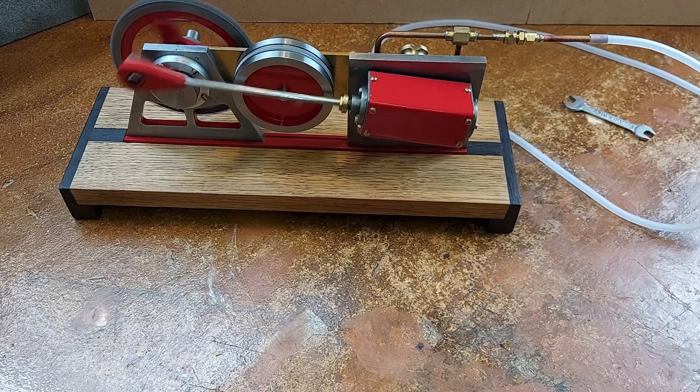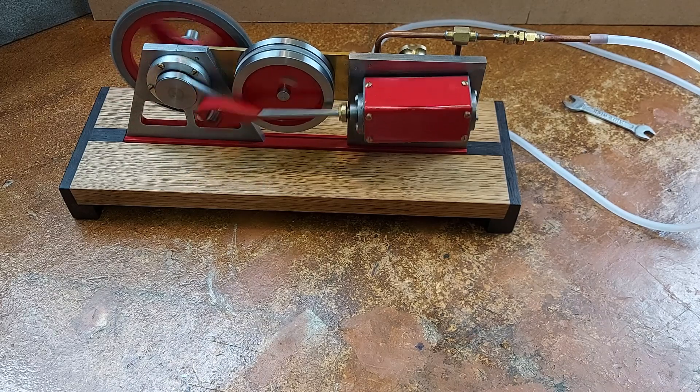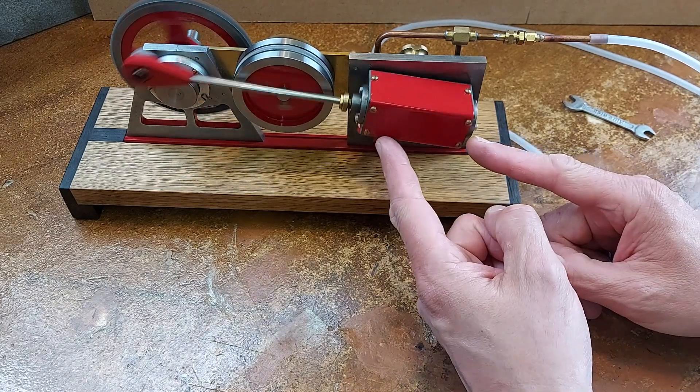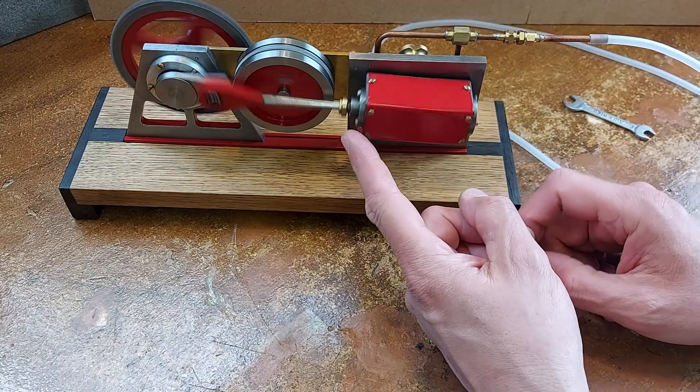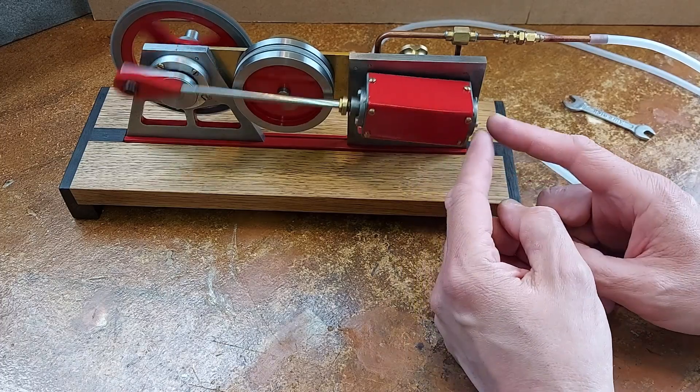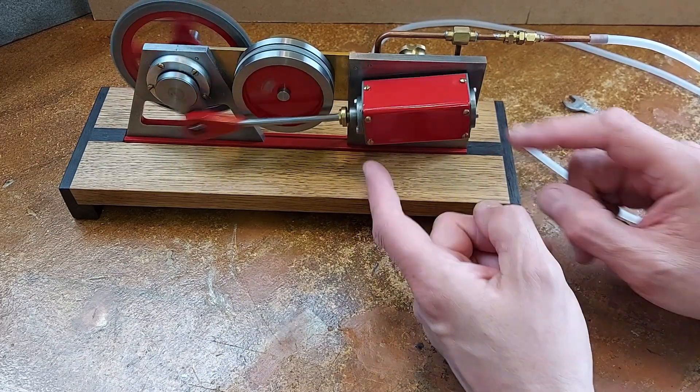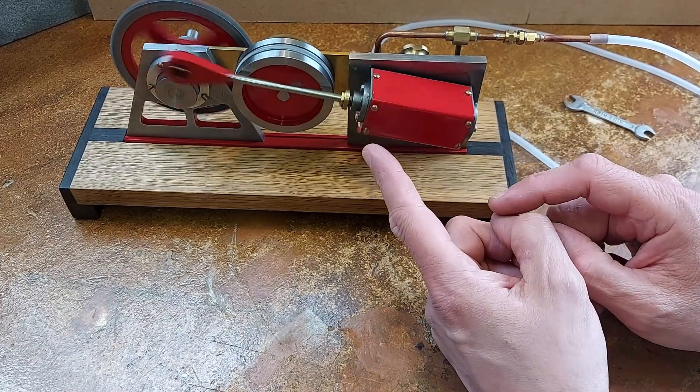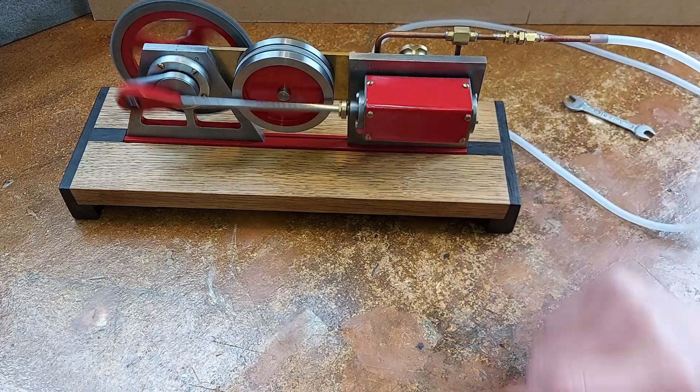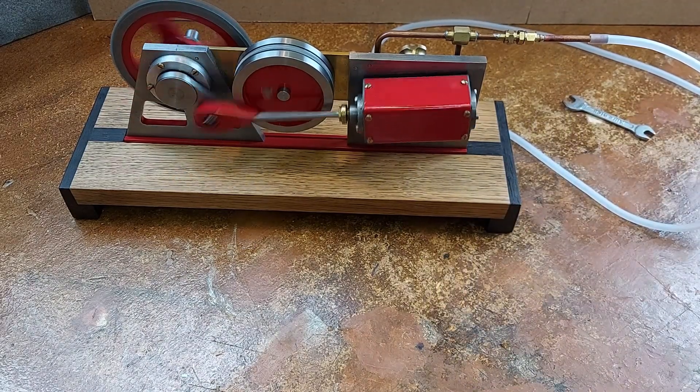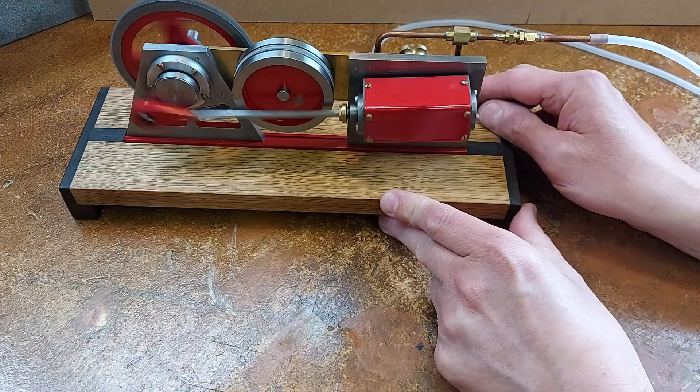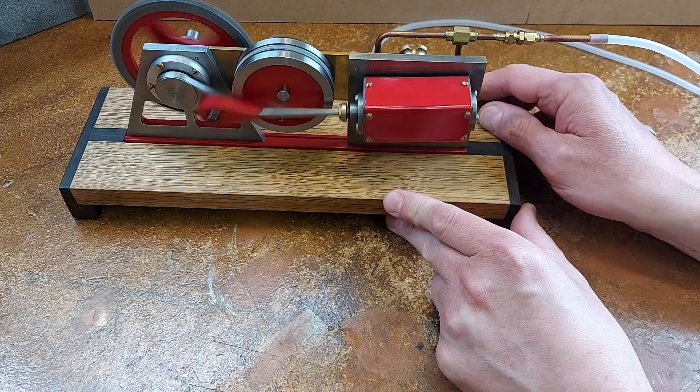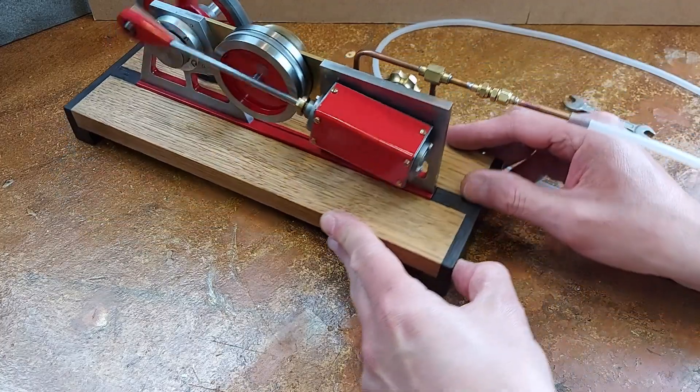Wow. There we are. So we can see the engine rocking and alternating between air in one end, air in the other end. And exhaust out of one end, exhaust out of the other. So as it comes to the bottom, it's on the exhaust port. As it goes to the top, it's on that compressed air.